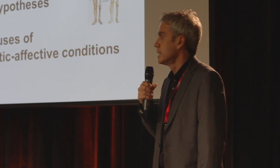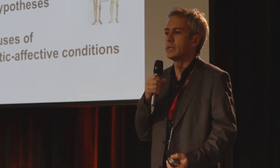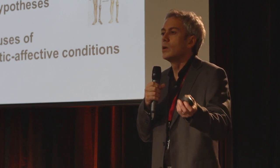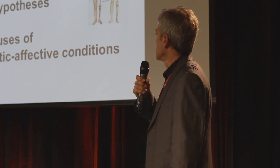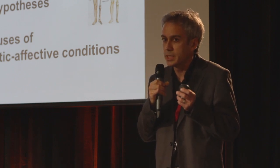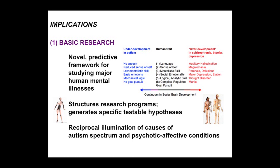There are a number of implications for this theory. The first is that it provides a new predictive framework for studying human mental illness. Traditionally, people who study autism don't pay attention to schizophrenia and vice versa — these studies have gone on in complete isolation. Using this framework, if we get some interesting pattern in one condition, we immediately know exactly what data to measure and what predictions to have for the other set of conditions. All the bodies of knowledge for each set of conditions can be carried over to help understand the other. This approach structures research programs, generates new hypotheses, and provides reciprocal illumination of the causes of these two sets of conditions.